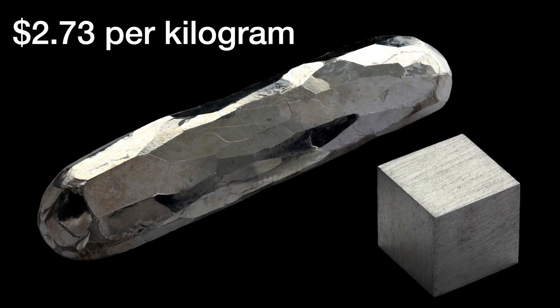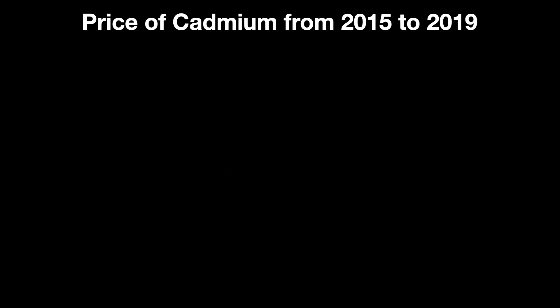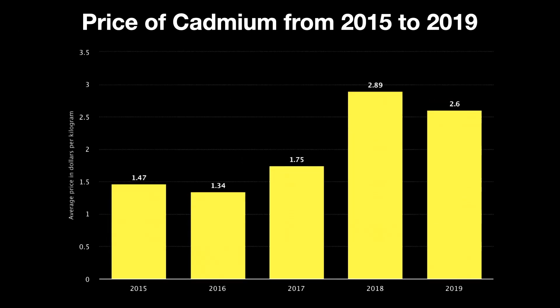Cadmium, despite its limited abundance, is actually pretty cheap — a little less than $3 per kilogram in large quantities. If you had invested in cadmium about five years ago, you would have made a tidy profit. It's almost doubled in price during those five years — that's about 14% per year on average, a pretty decent return on investment.